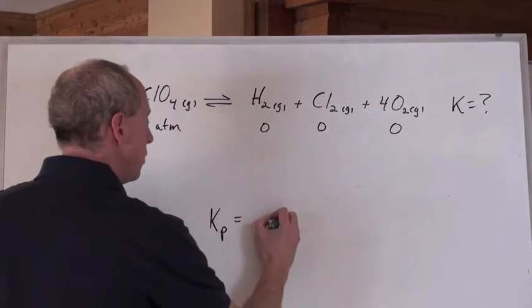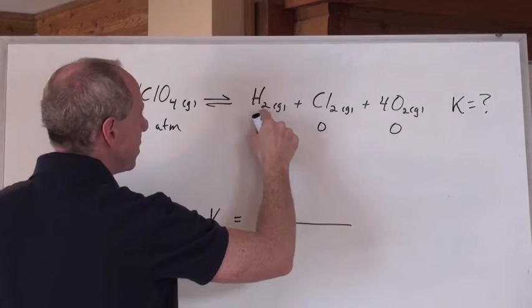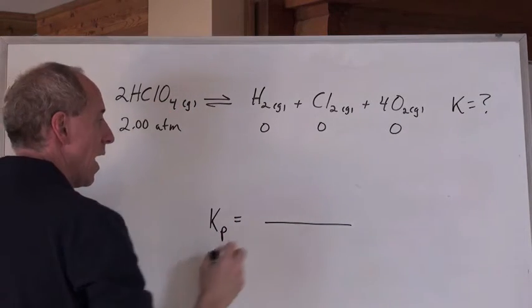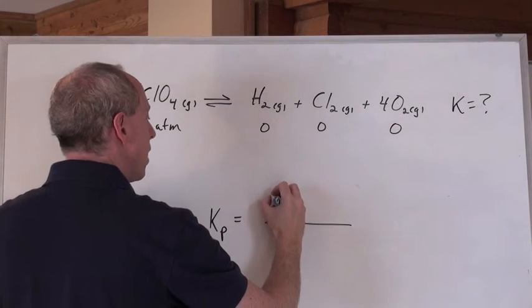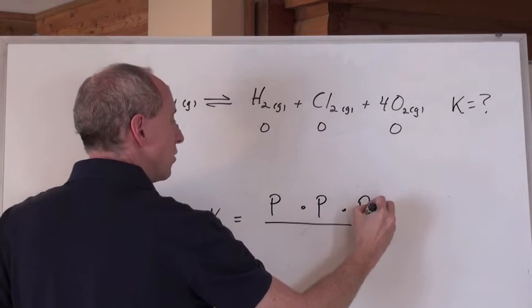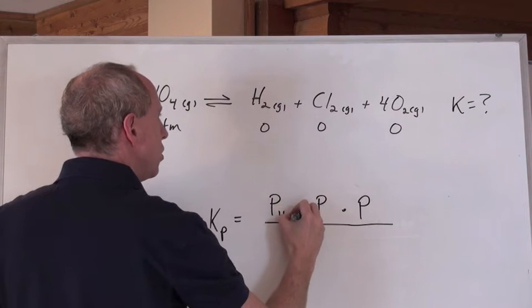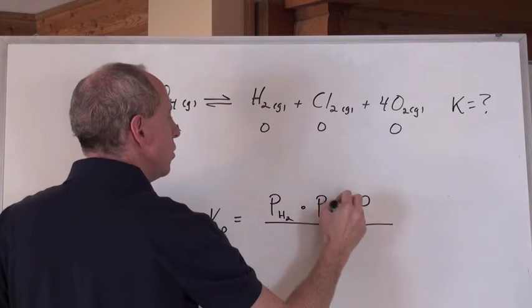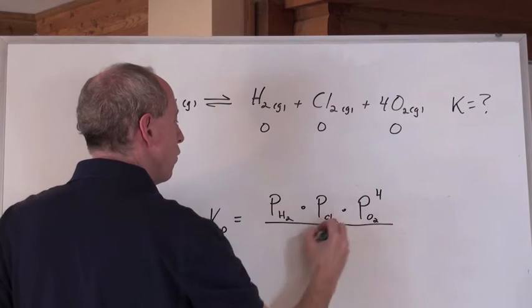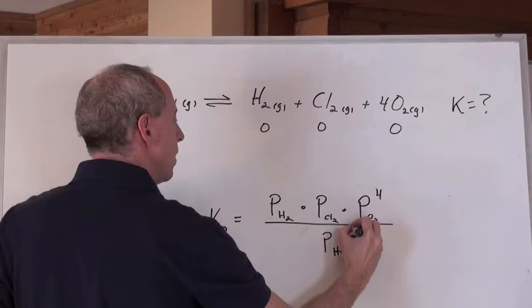Now, what are we going to do here? Well, it's not the concentrations this time, but it's the pressures of the products divided by the pressure of the reactants. So what you do is write down pressure times pressure times pressure, because they're still being multiplied together. It's going to be the pressure of the H2 times the pressure of the Cl2 times the pressure of the O2, but that pressure is to the fourth, divided by the pressure of the HClO4, but it's squared.